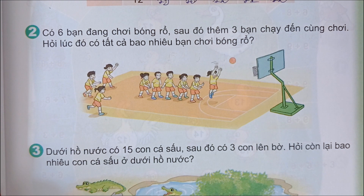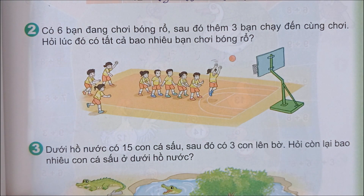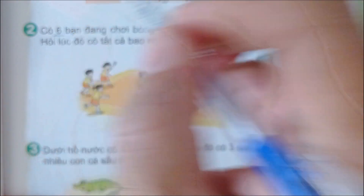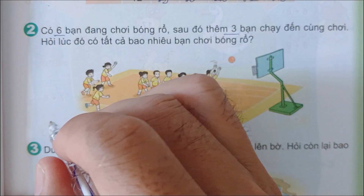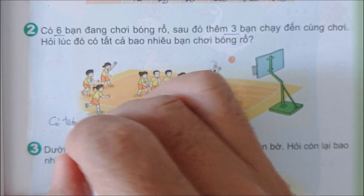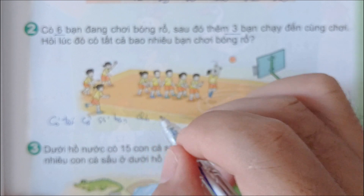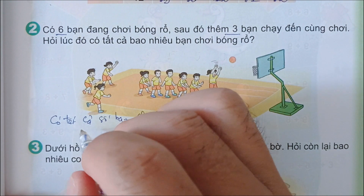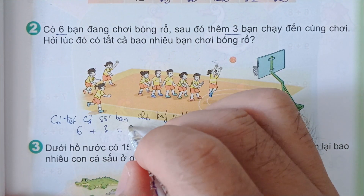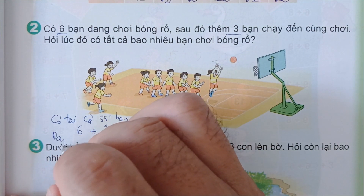Bài tiếp theo: Có 6 bạn đang chơi bóng rổ, sau đó thêm 3 bạn chạy đến cùng chơi. Hỏi lúc đó có tất cả bao nhiêu bạn chơi bóng rổ? Như vậy có 6 bạn, sau đó thêm 3 bạn. 6 cộng 3 bằng 9. Đáp số: 9 bạn.